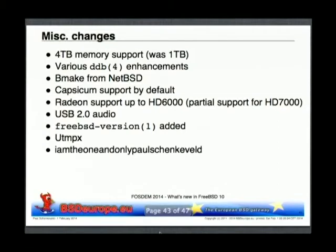UTMP used to be the little database holding records of all users logged into the system, written at the time of Bell Labs Unix with fixed-size fields for terminal names, usernames, and similar. If you're logging in over a network, the IP address is often cut off because it just doesn't fit. UTMPX is a much more flexible database with enough space for whatever location you're logging in from. And we now finally also have longer usernames — up to 32 characters.